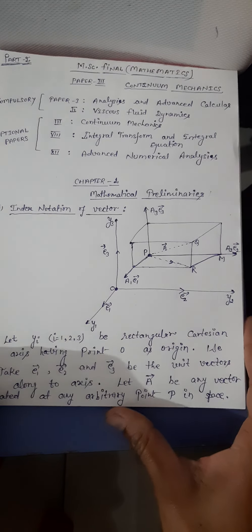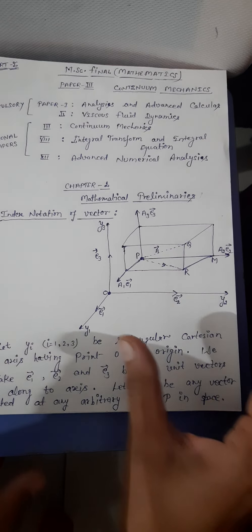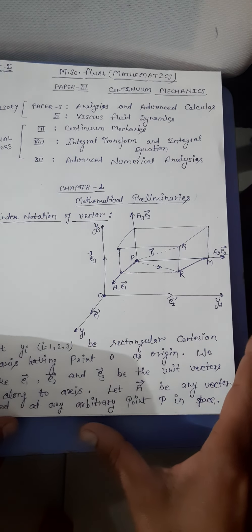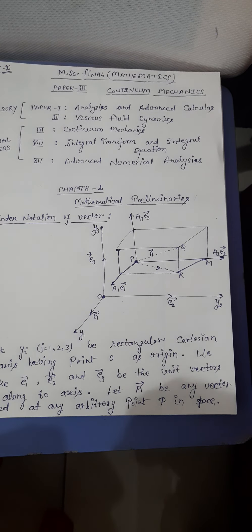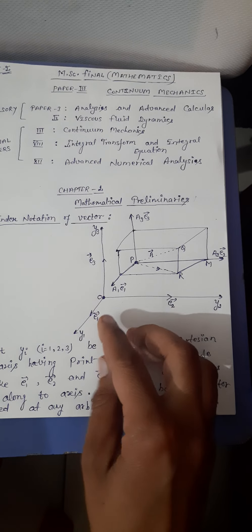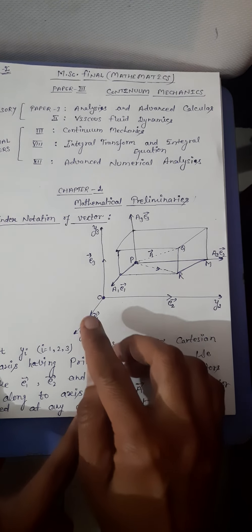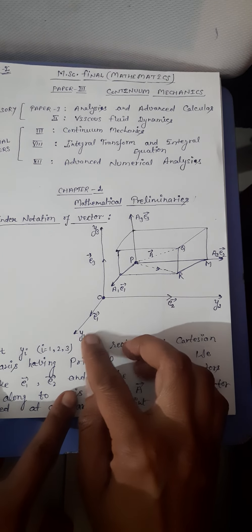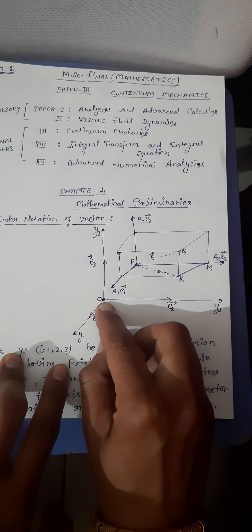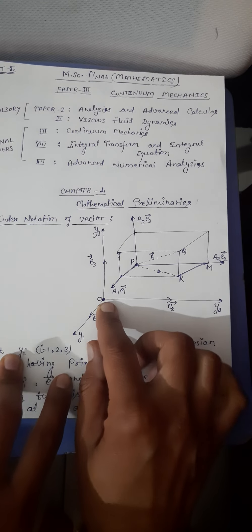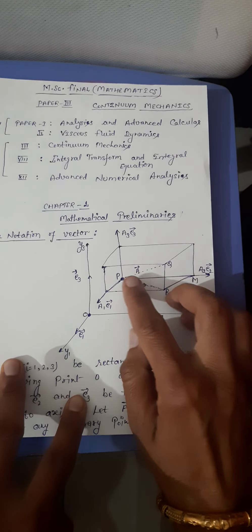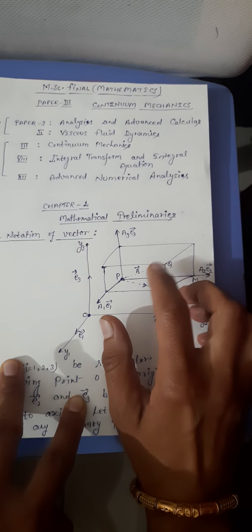In the figure, let y1, y2, and y3 be the rectangular Cartesian coordinate axes — that is, yi where i equals 1, 2, 3 — having the origin point at O.